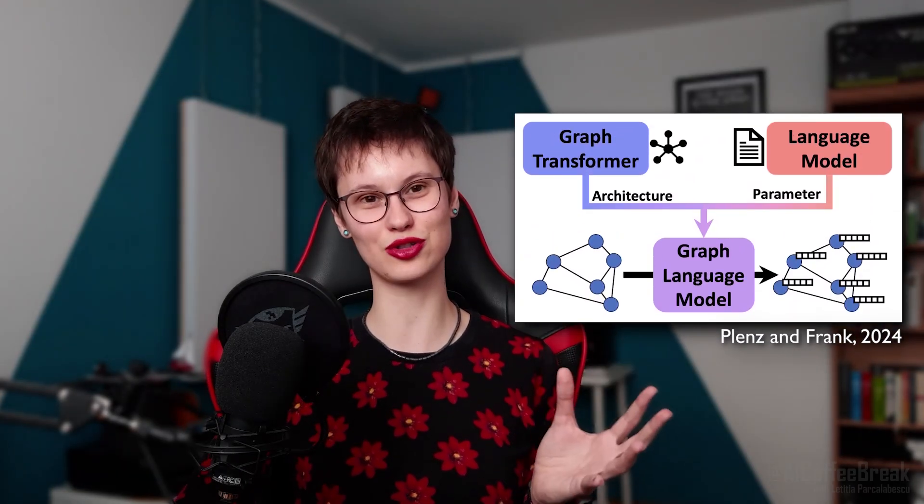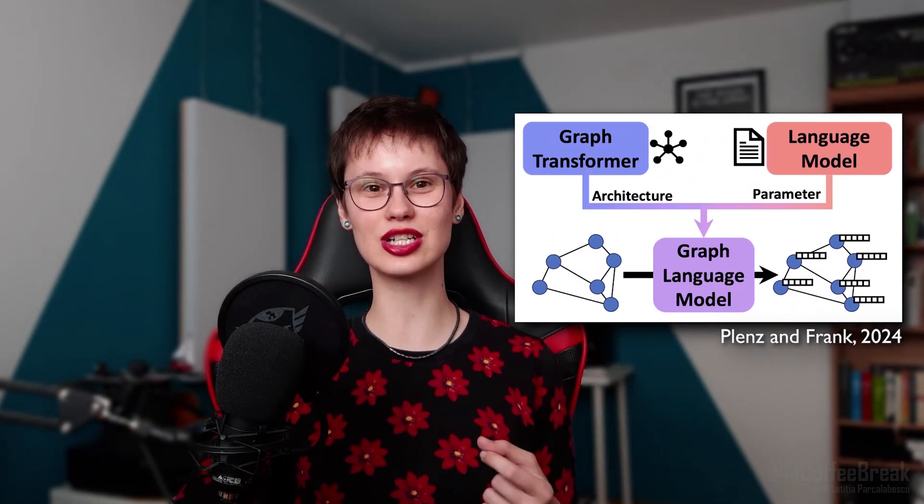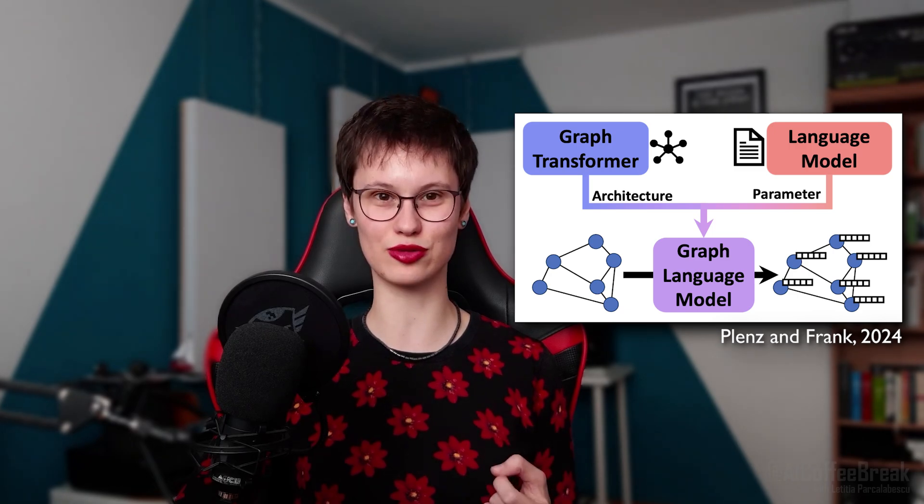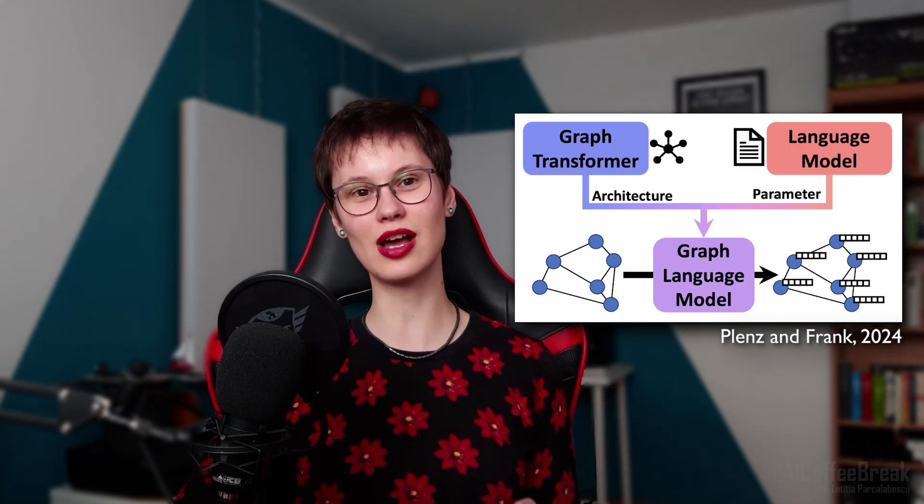Well, today's poster highlight might just be the solution. Moritz, a colleague of mine from Heidelberg, is introducing graph language models. These models essentially take a pre-trained language model and make it understand graphs in their underlying structure too. The only main requirement is that the language model uses relative positional embeddings during pre-training or rotary positional encoding that most modern language models use.